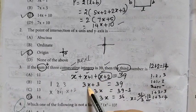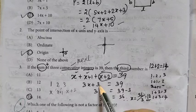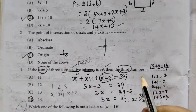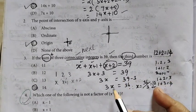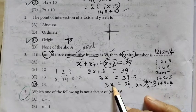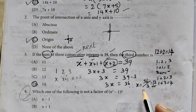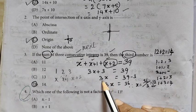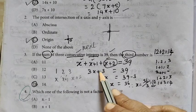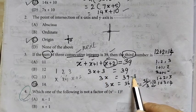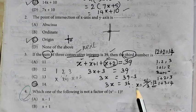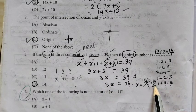x plus x plus 1 plus x plus 2 equals 39. Simplifying: 3x plus 3 equals 39, so 3x equals 36. Therefore x equals 12. The third number is 12 plus 2 equals 14.